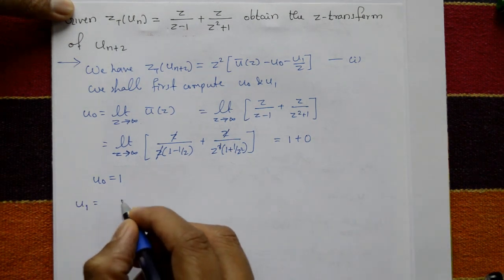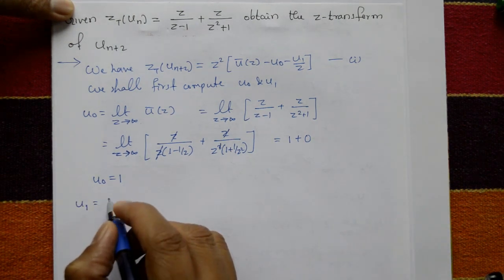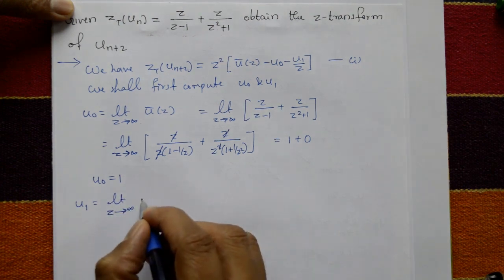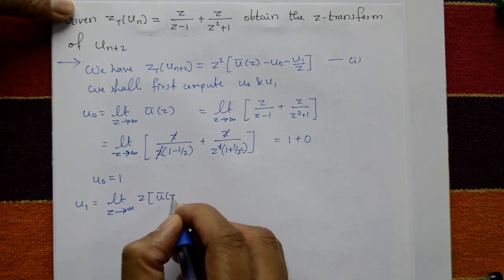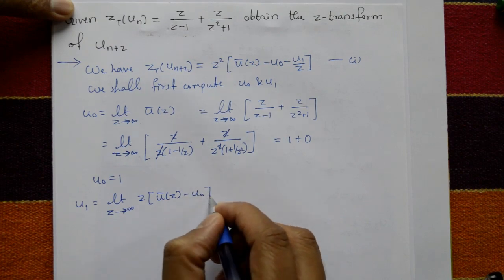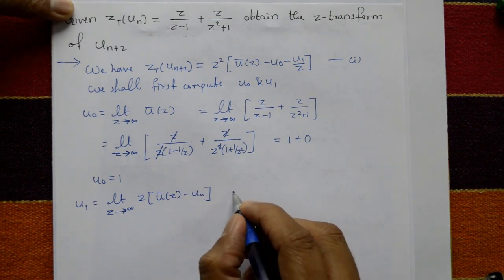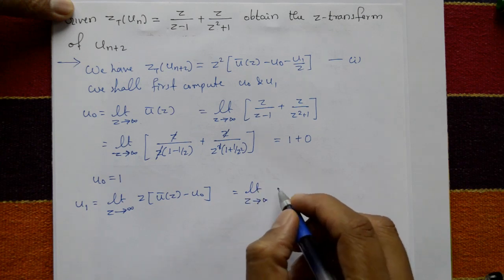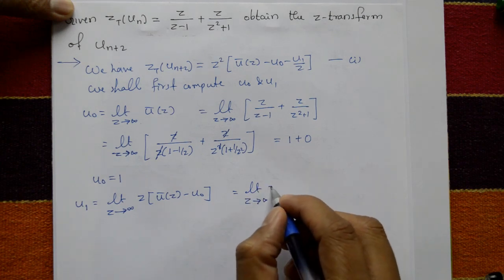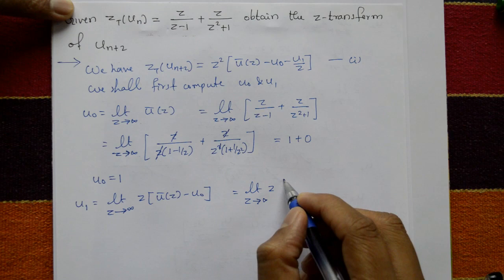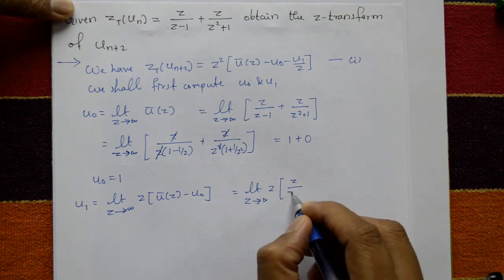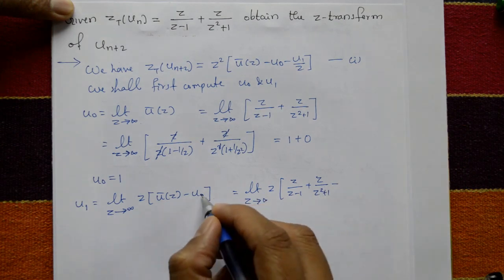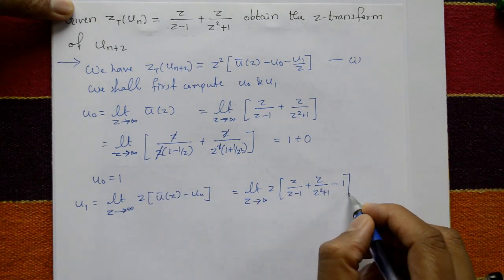Now for u(1): u(1) is equal to limit z tends to infinity of z · [Ū(z) - u(0)]. This equals limit z tends to infinity of z multiplied by [z/(z-1) plus z/(z²+1) minus 1], substituting the value of u(0) as 1.